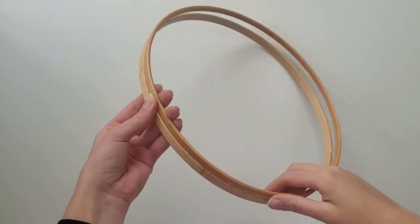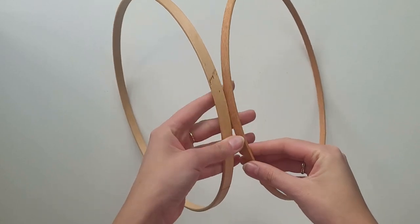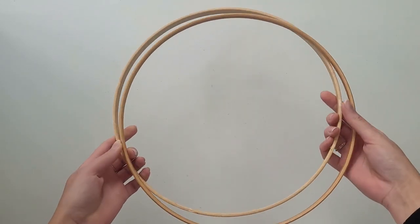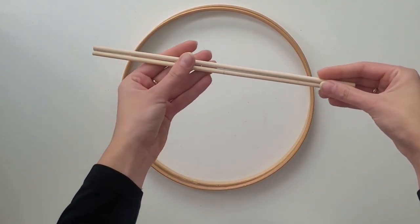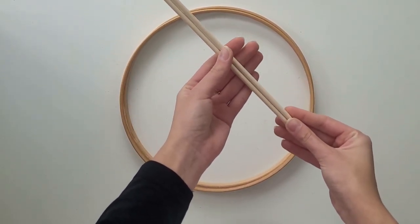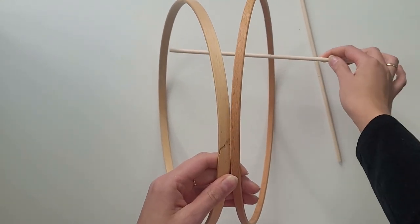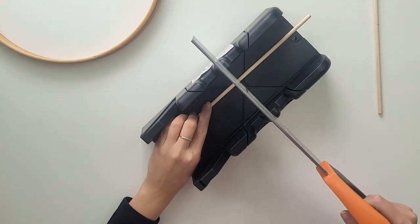To create a macrame magazine rack, I will be using two same size embroidery hoops. Ideally would be to use thin metal hoops. Mine are also slightly different thickness and color but that won't affect too much of the final effect. I will also need wooden sticks or dowel. I will be using them to connect these two hoops together. I've marked the middle point and then cut them using a saw.